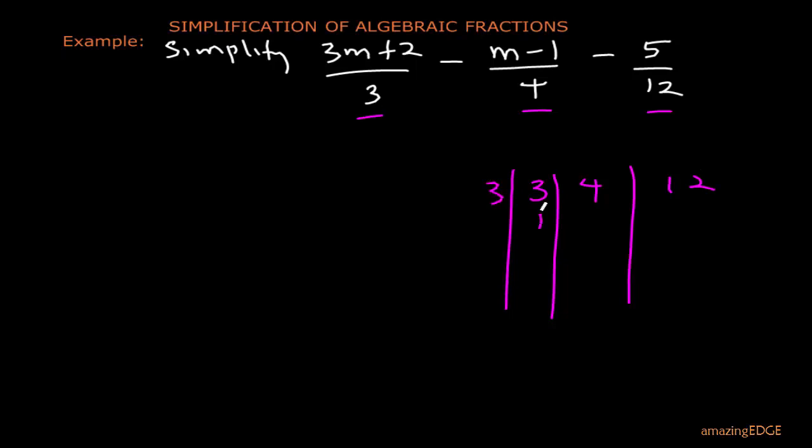So we can see that 3 can divide itself 1. It cannot divide 4, so we bring 4 down. Then when 3 divides 12, it will give us a 4. Then another thing that can divide is 4, so 4 can go. So 4 going into 1, it cannot.